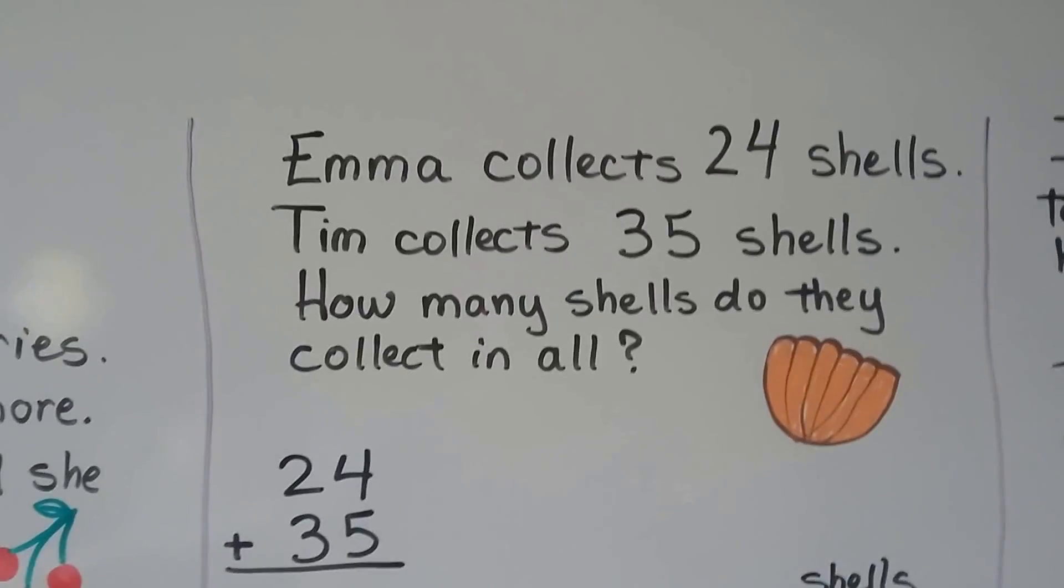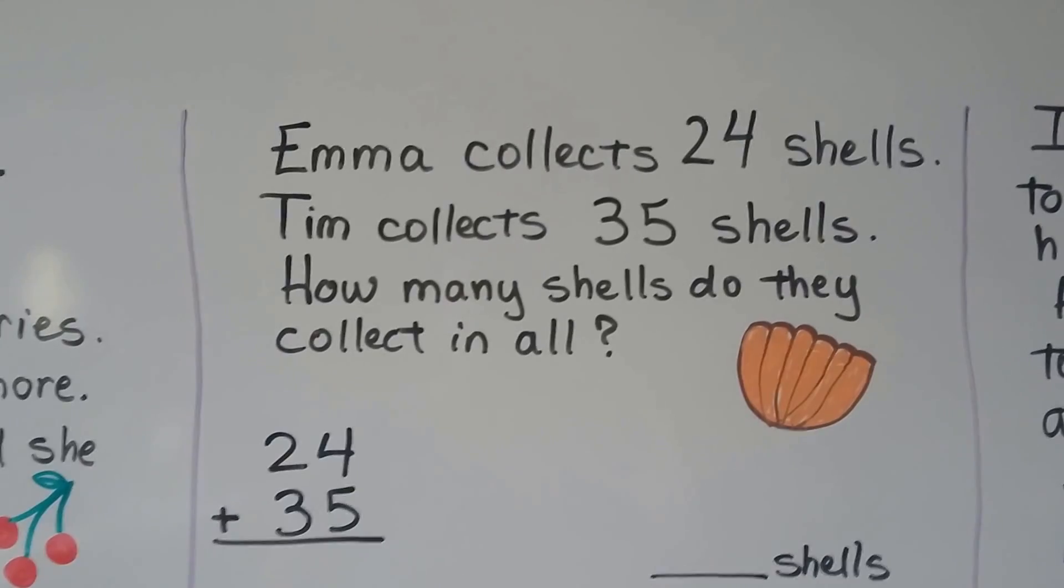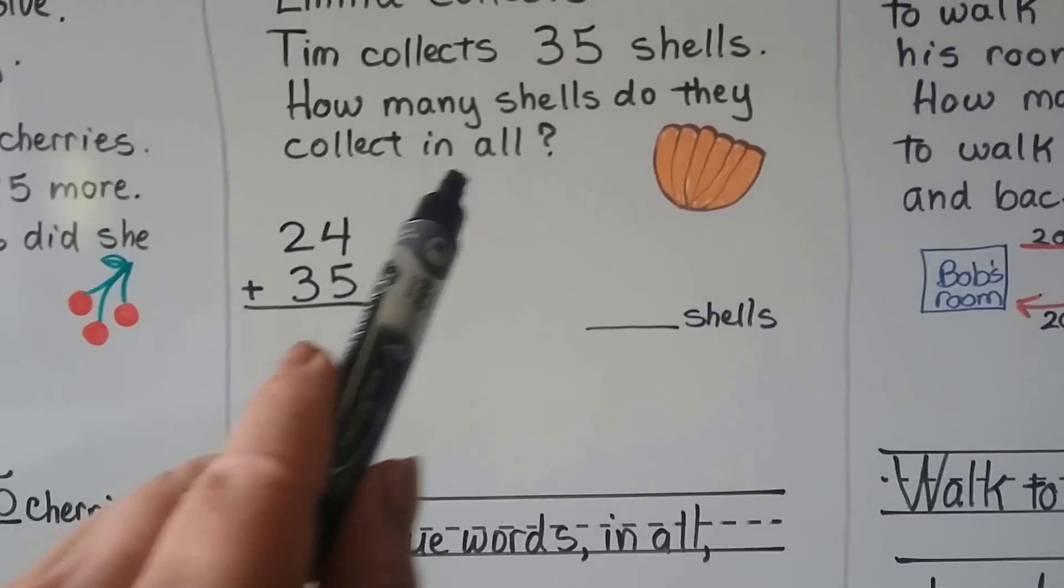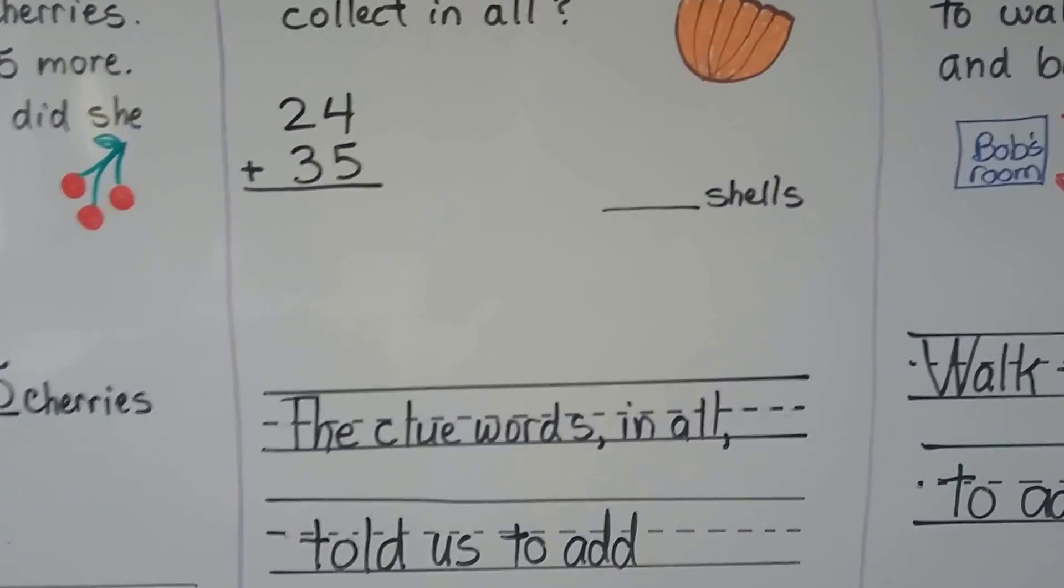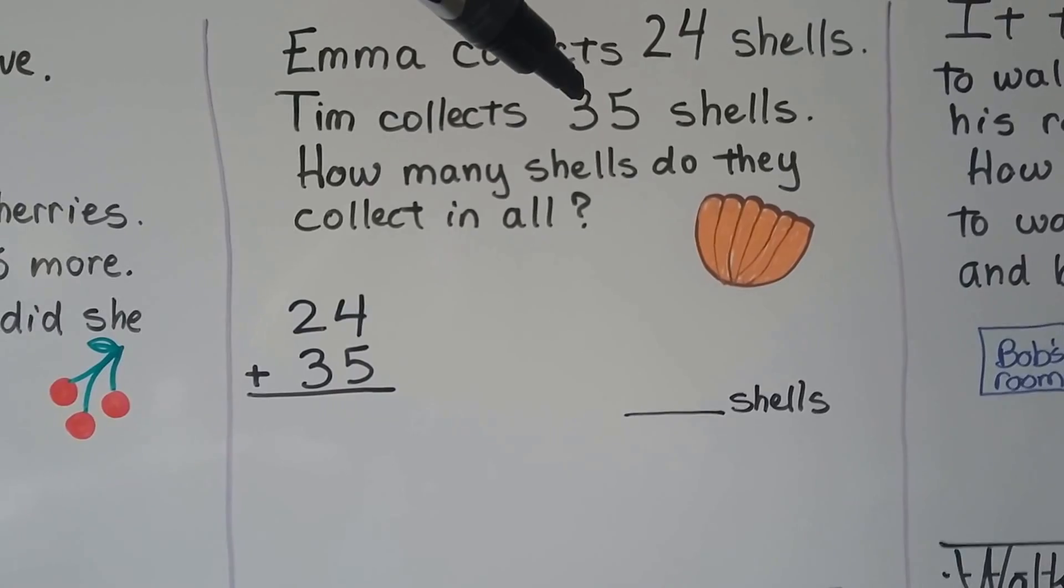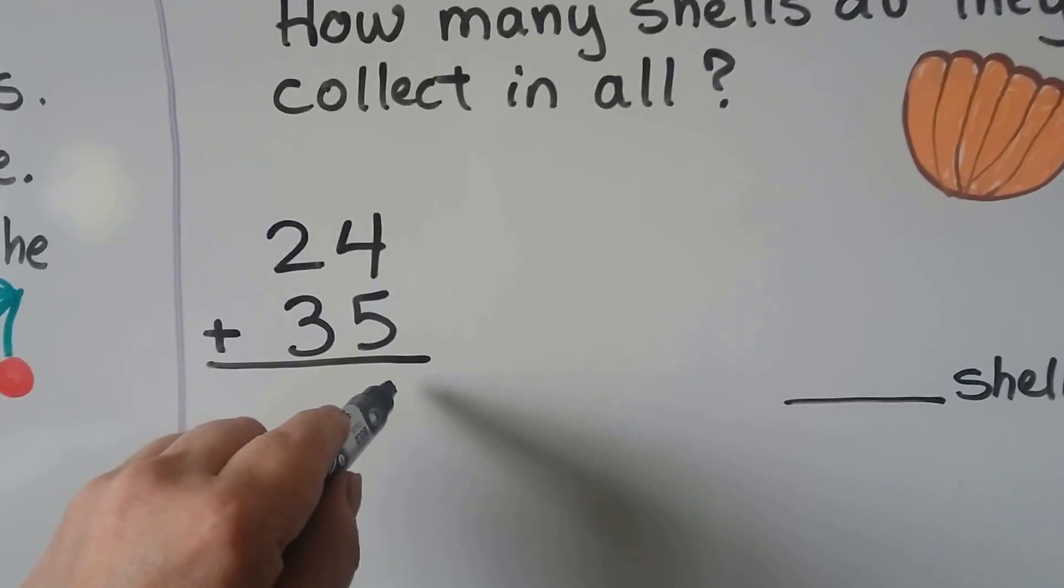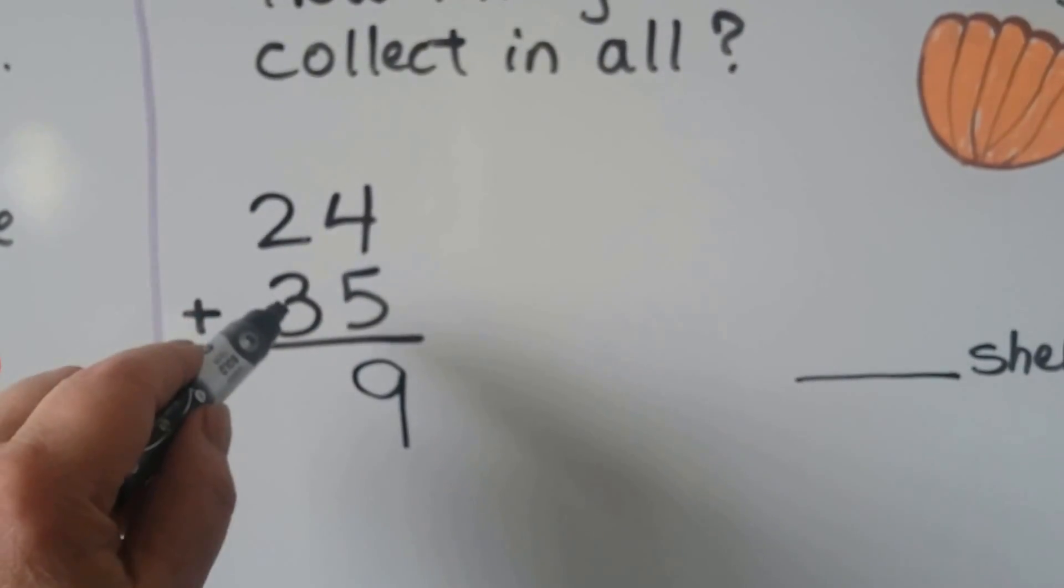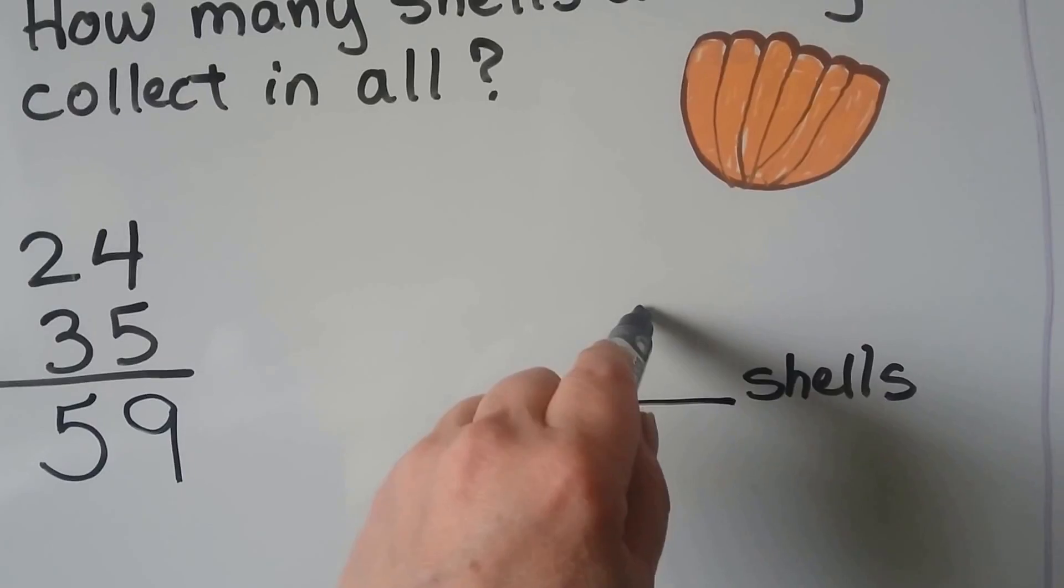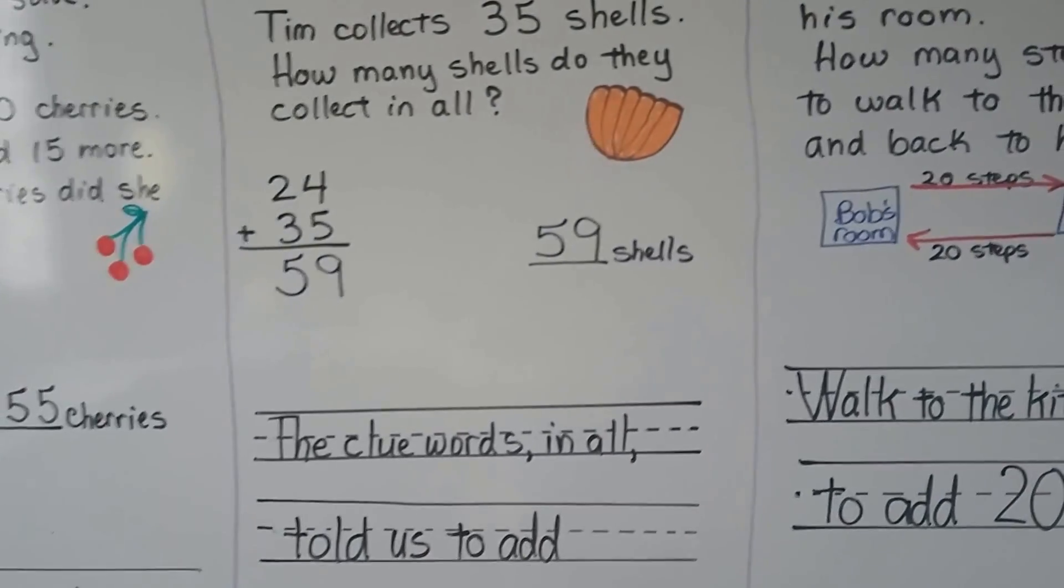Emma collects twenty-four shells. Tim collects thirty-five shells. How many shells do they collect in all? Our reasoning to solve this is the clue words in all, right here. They told us to add. We add the twenty-four that Emma collected, the thirty-five that Tim collected. Five ones and four ones makes nine ones. Two tens and three tens makes five tens. That's fifty-nine. There's fifty-nine shells in all that they collected. The clue word was in all. It told us to add.